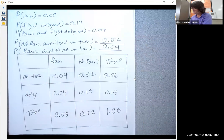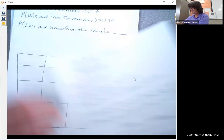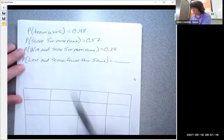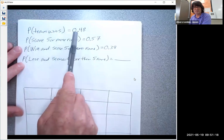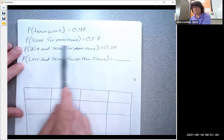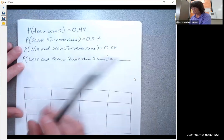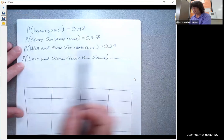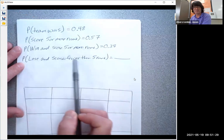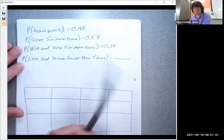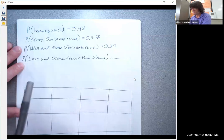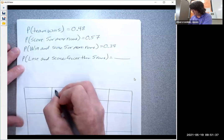Let's do another one. Okay. In this problem, you've got a baseball team. The chance the team wins is 48%. The chance they score five or more runs is 57%. The chance they win and score five or more runs is 38%. And to start, I want to know what's the chance they lose and score fewer than five runs. So if I just asked you this straight up, it would be pretty difficult to get your head around it. So we're going to make a table.